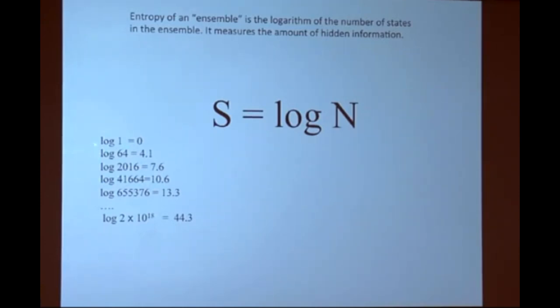For example, the state with no flipped coins, there's only one state, log 1 is 0, it has no entropy. And you go down, the entropies rise, not as fast as these numbers on the left, but the entropy goes up, and eventually reaches a maximum.